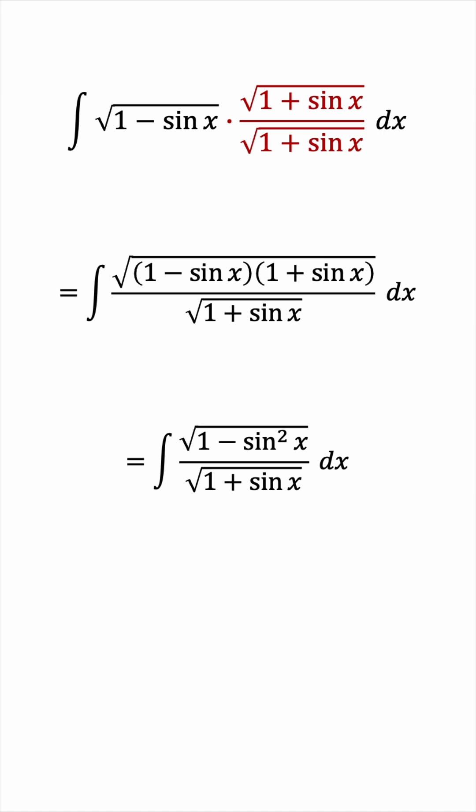And now we can simplify this by doing what we described earlier. We'll rewrite this as cosine squared x and then cancel the square root like that.